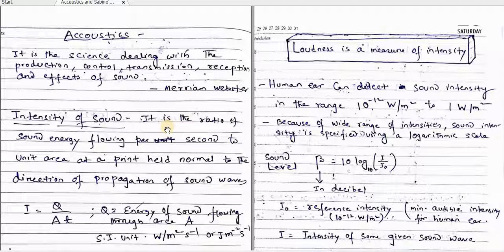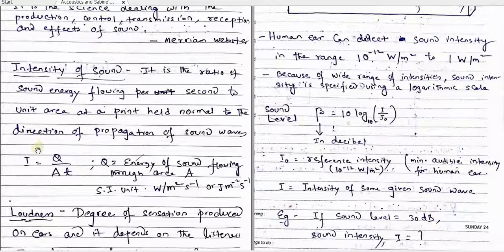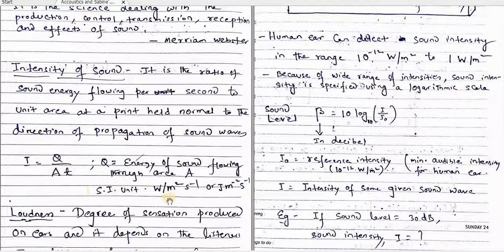Next, intensity of sound. It is defined as the ratio of sound energy flowing per second to unit area at a point held perpendicular to the direction of propagation of the sound wave. The intensity of sound can be expressed by this formula: energy of sound flowing for area A in time T. Its unit is watt per meter squared.